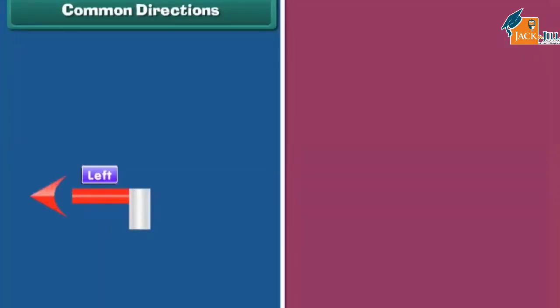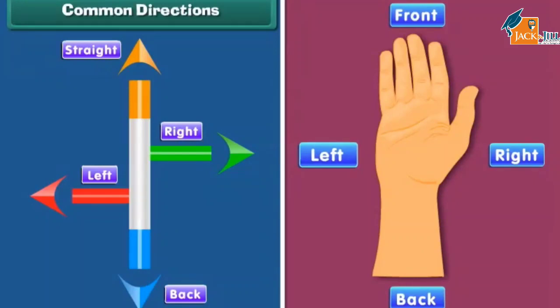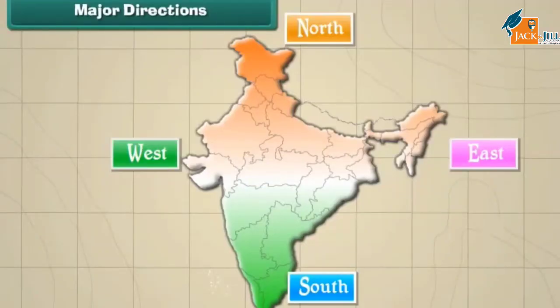Common directions: turn left, turn right, go straight ahead, go back. We use these words when people ask us for directions. We can use our hands to indicate the four common directions: left, right, front, and back.